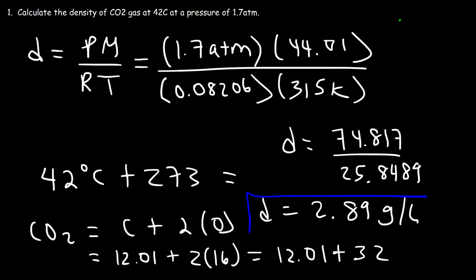So this is the answer. Now you know how to calculate the density of a gas. All you need is the molar mass of the gas, the temperature in Kelvin, and the pressure in atm.